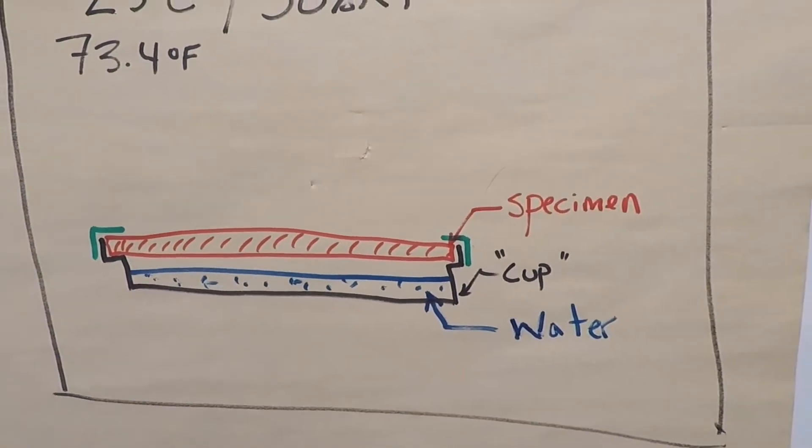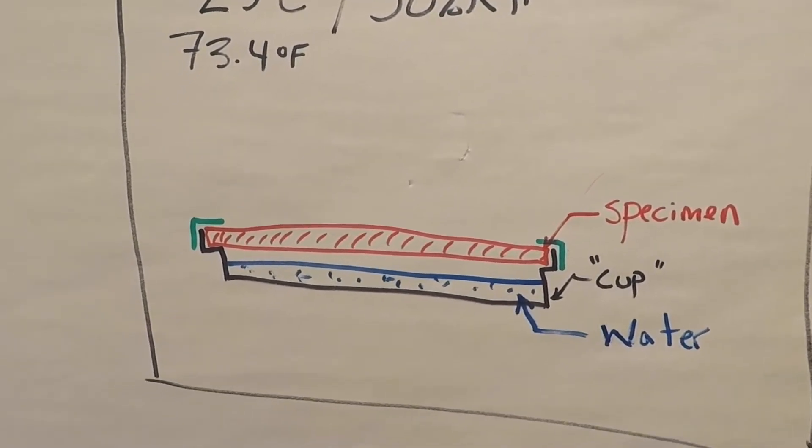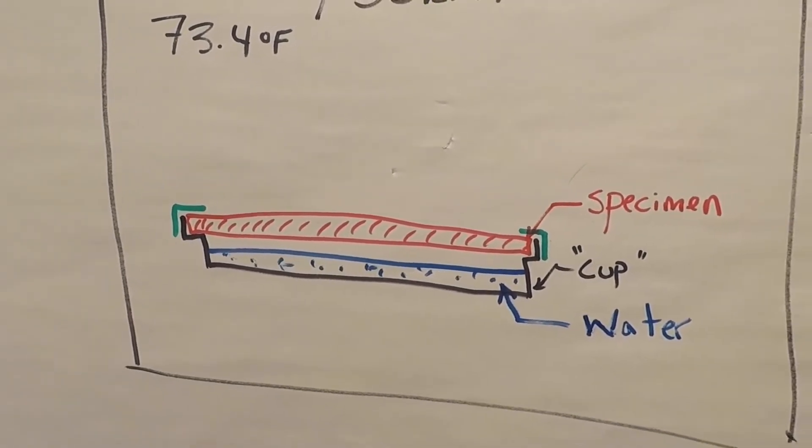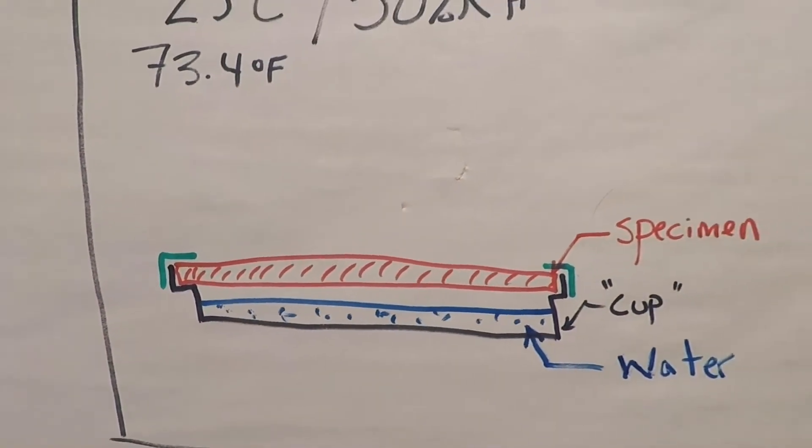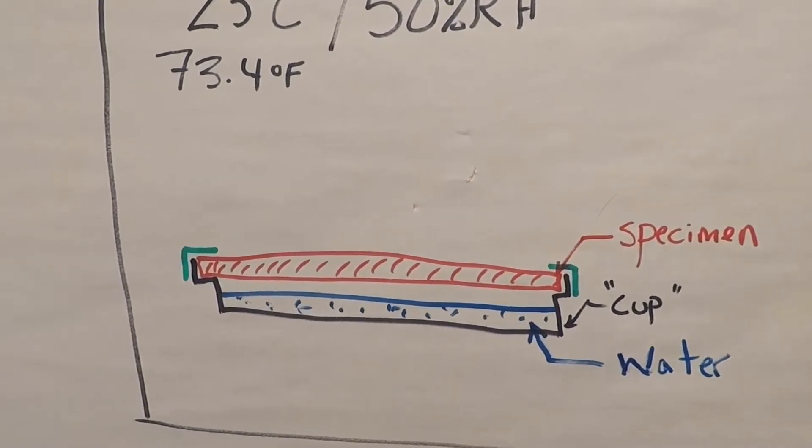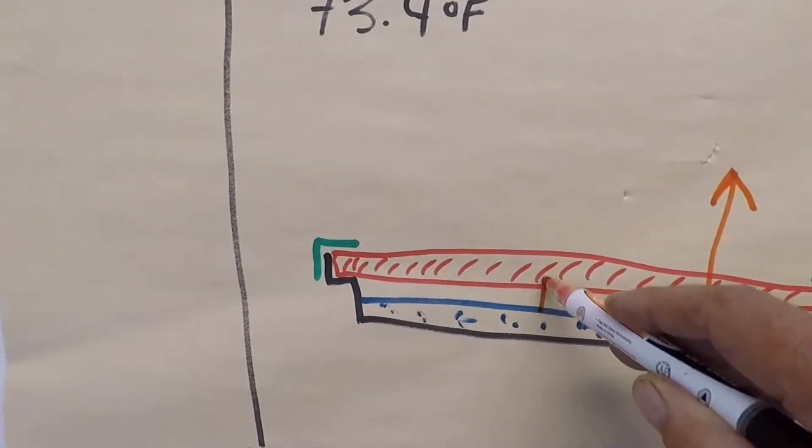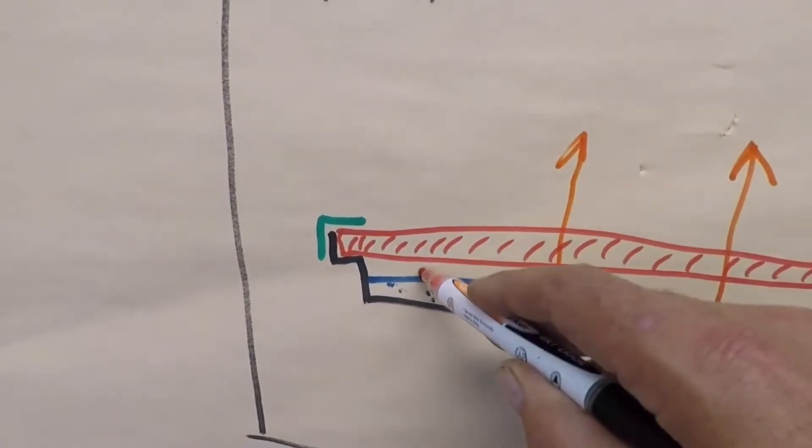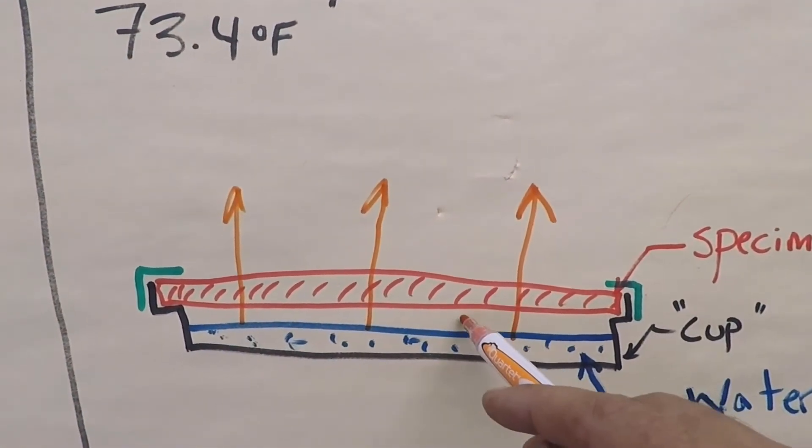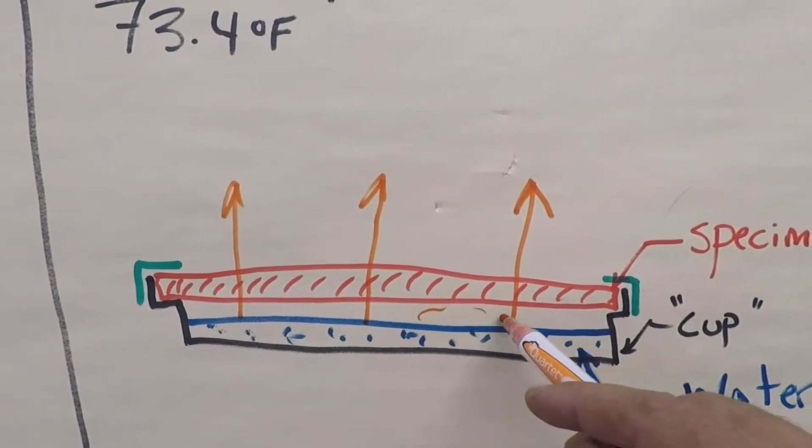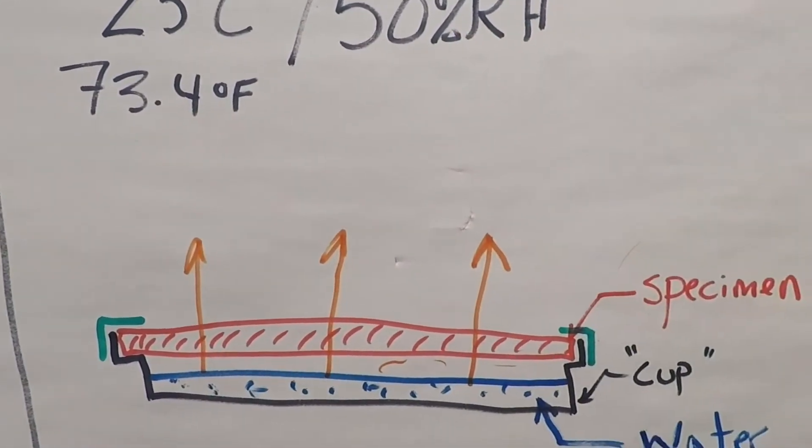We have a cup. We affix the specimen to this vapor tight cup, and we fill the cup, in this example, with water. Water will be expected to move through the specimen from more water vapor because just above this water, we expect it to be close to 100% humidity into this 50% relative humidity condition.